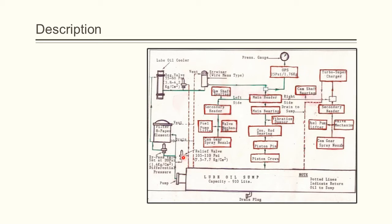From here, the remainder of the oil flows through the filter which is equipped with the differential pressure bypass valve to hold a relatively constant pressure across the filter. From the filter, the oil flows through the cooler which acts like a heat exchanger and then to the regulating valve and then to the strainer.